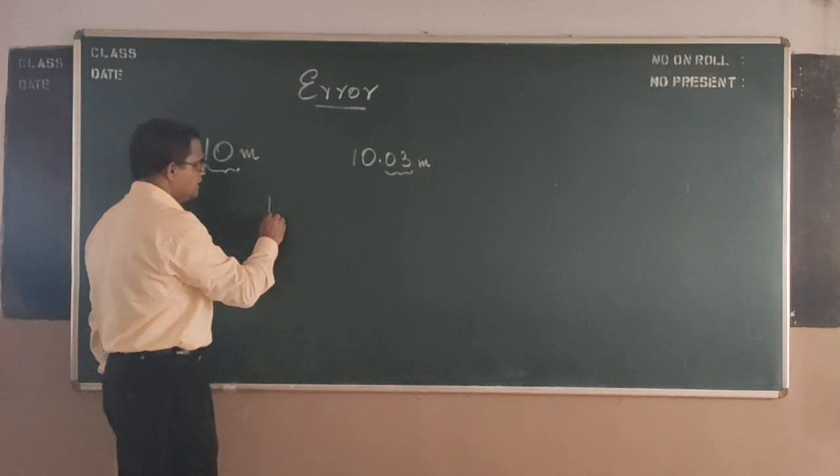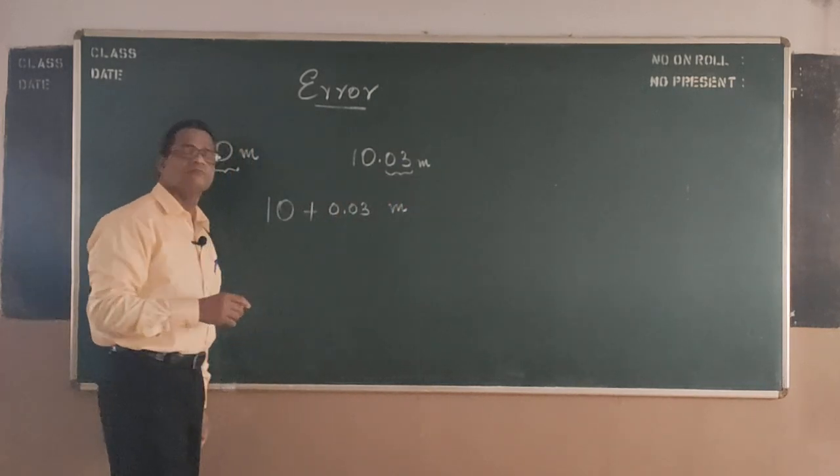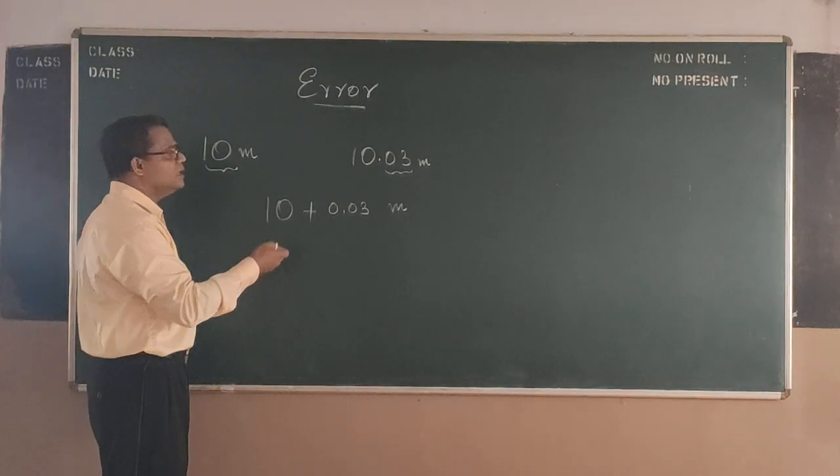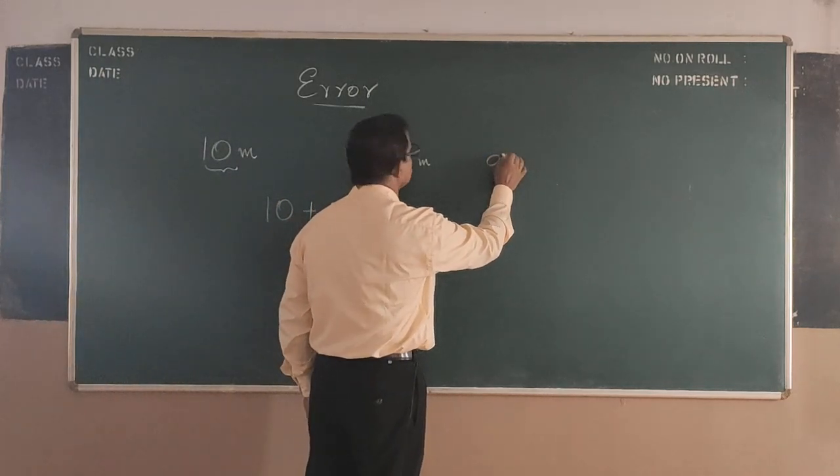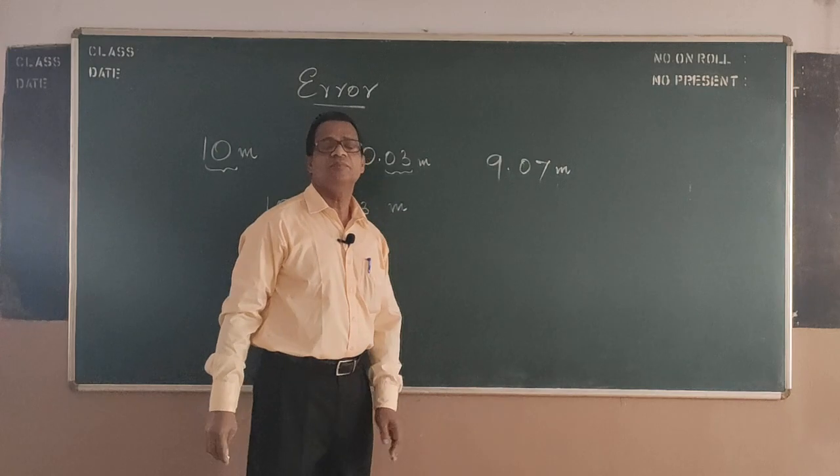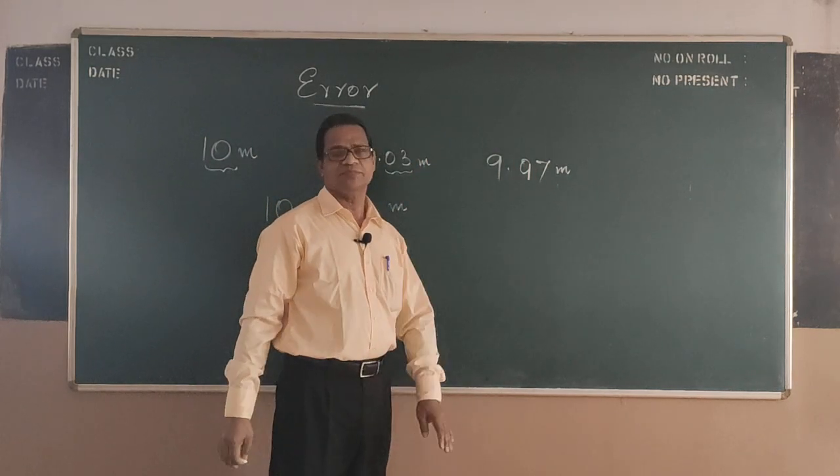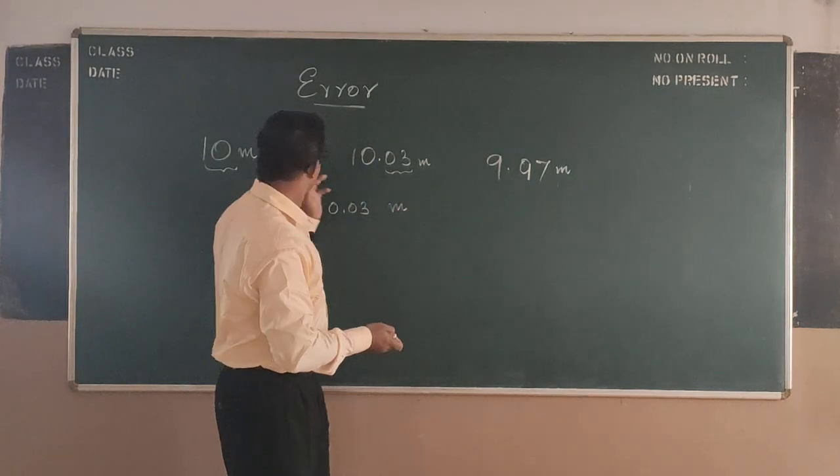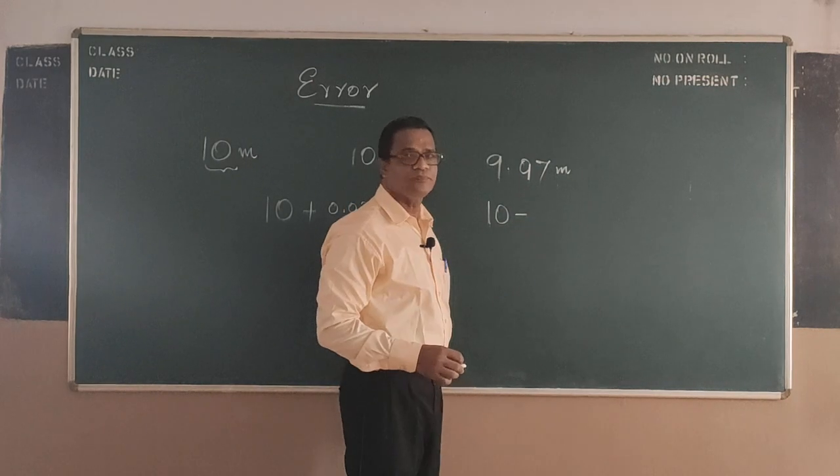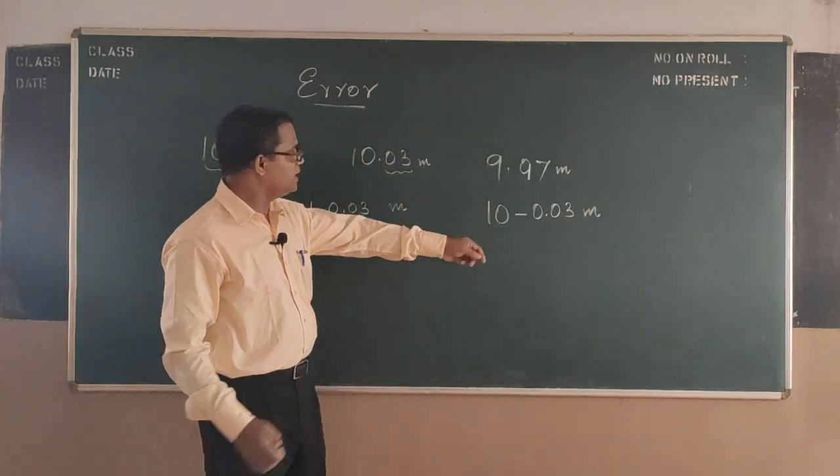Now here we are getting an error of 10.03 meters. Some other people measuring the same length of 10 meters sometimes will be getting less than 10, like 9.97 meters. So it is less than 10 meters. I can express this measurement as 10 minus 0.03 meters.